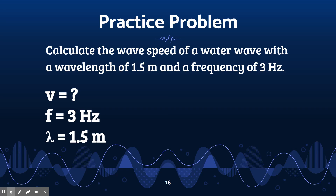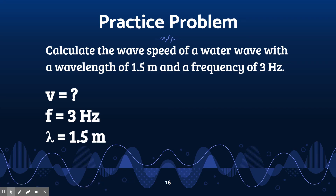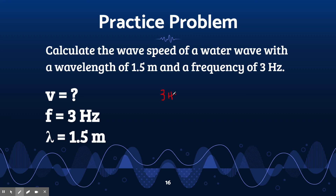Your job right now is to calculate the wave speed of a water wave with a wavelength of 1.5 meters and a frequency of 3 hertz. Using the equation v equals f times lambda, we get 3 hertz times 1.5 meters, which gives us a velocity of 4.5 meters per second.